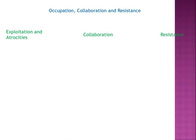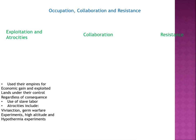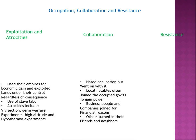In terms of life during the war, we see a lot of exploitation and atrocities. The Axis powers used their empires for economic gain, exploiting land under their control regardless of the consequence. They used people as slave labor. Atrocities were committed especially on the Jewish people — such as vivisections, germ warfare experiments, high-altitude experimentations to see how long it took for someone to die or pass out, and hypothermia experiments. With collaboration, it was a hated occupation but people went along with it because they had no choice. Local notables joined occupied governments to gain power.